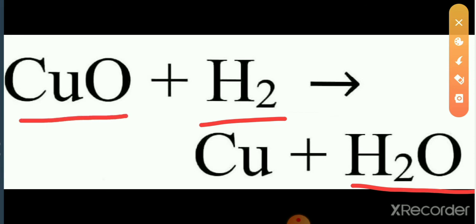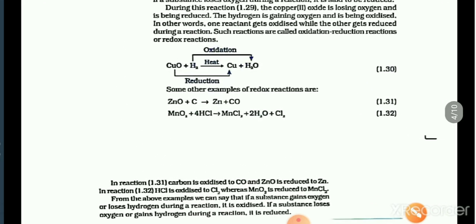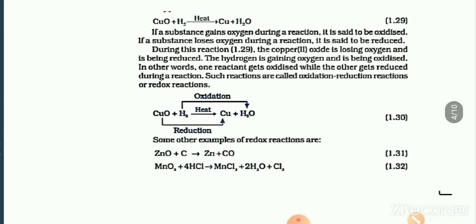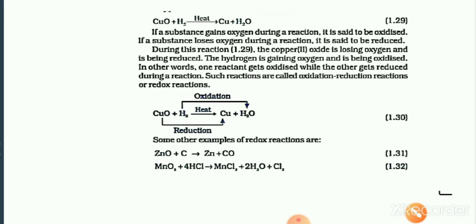Copper oxide reduces — that means oxygen is lost; copper oxide reduces to copper. So in the same reaction, reduction takes place for copper oxide and oxidation takes place for hydrogen.